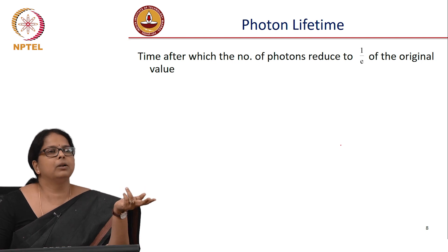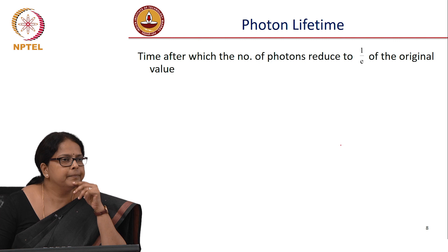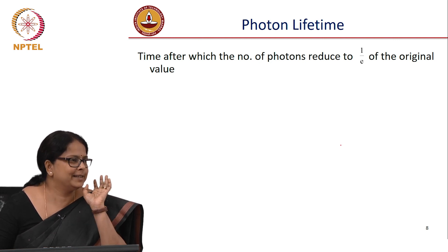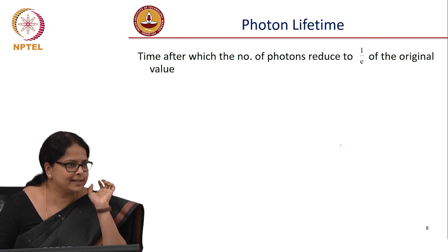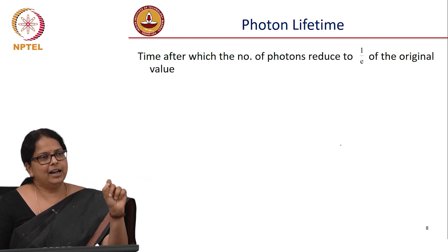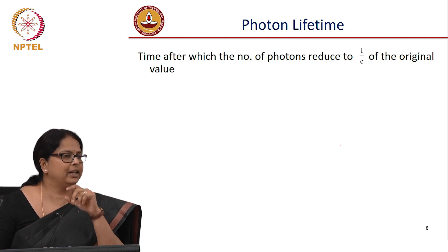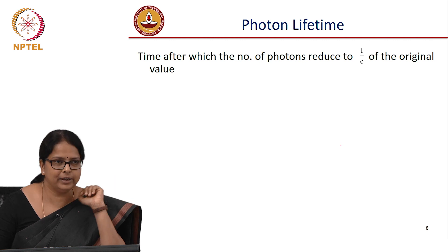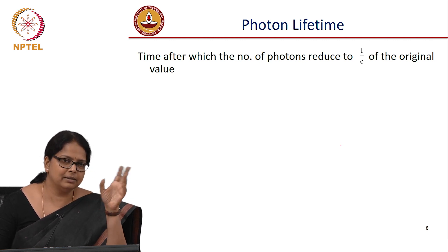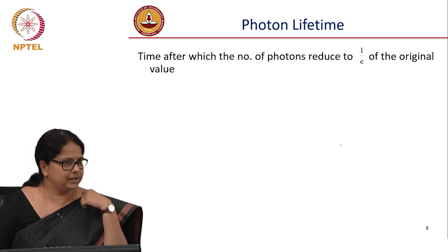The second problem is modulation bandwidth. How did we derive the modulation bandwidth of LED? We did what is called small signal harmonic analysis. We had a rate equation where I is modulated as I_b plus I_m·sin(ωt) or e^(jωt). We did harmonic analysis and said that I_b is very small so that nothing drastically changes in the system, and then we looked at the response of the system.